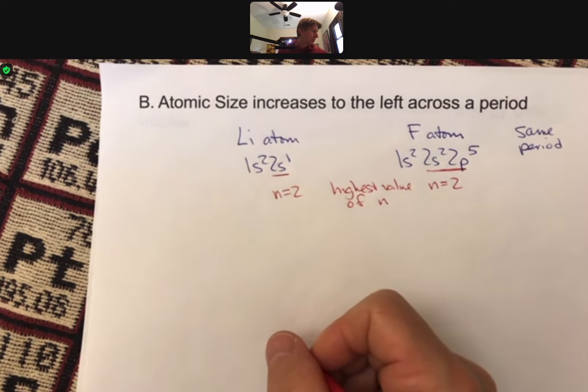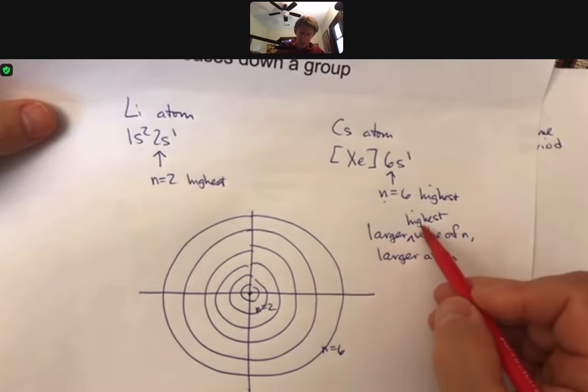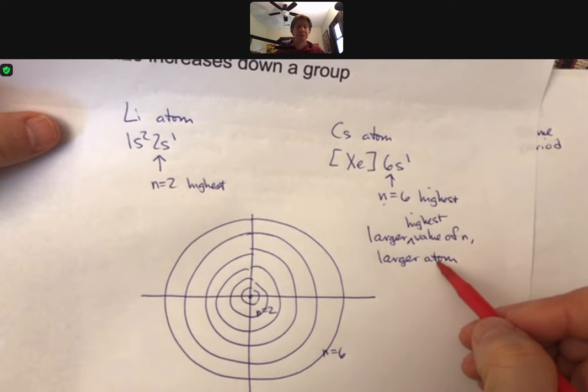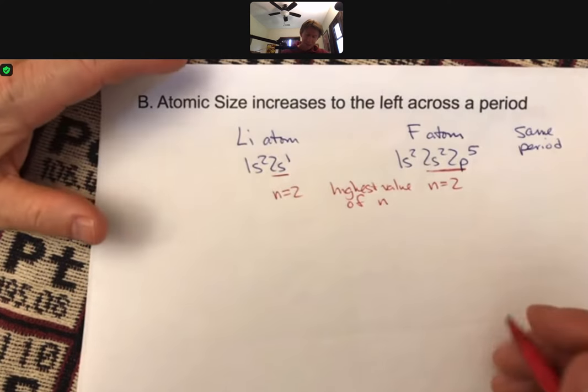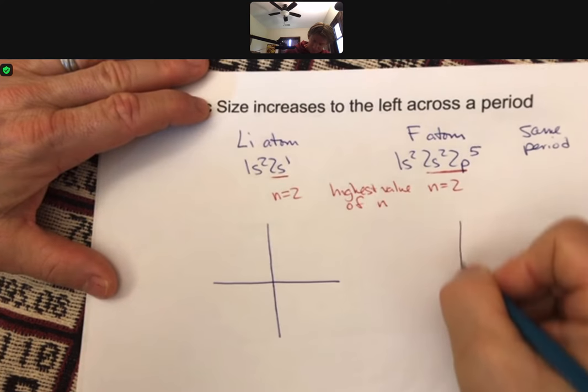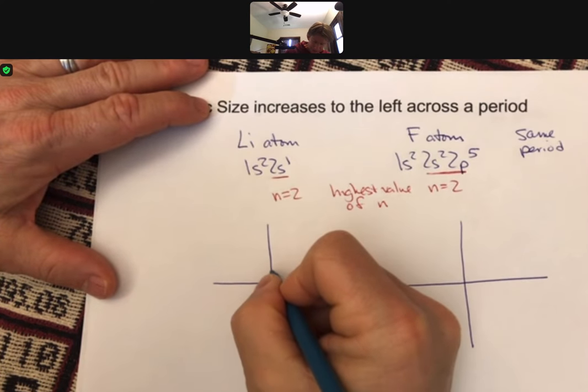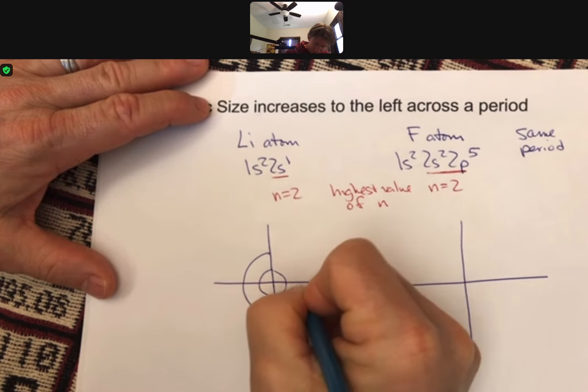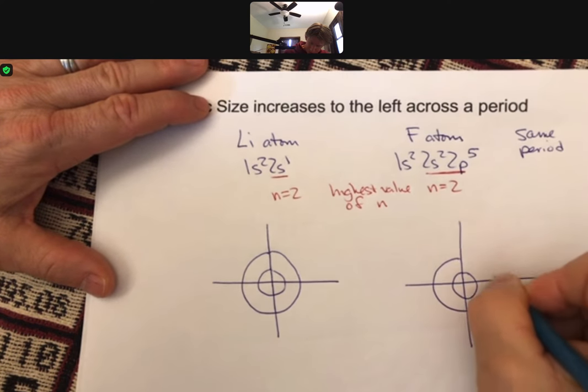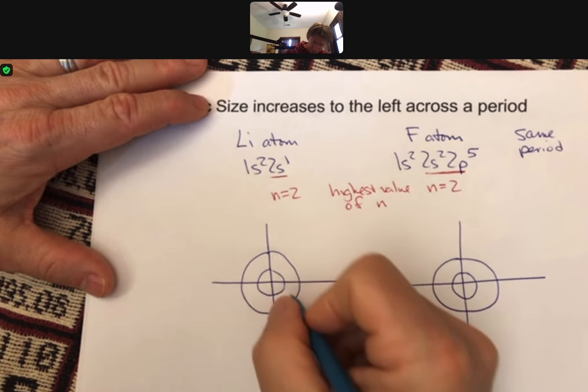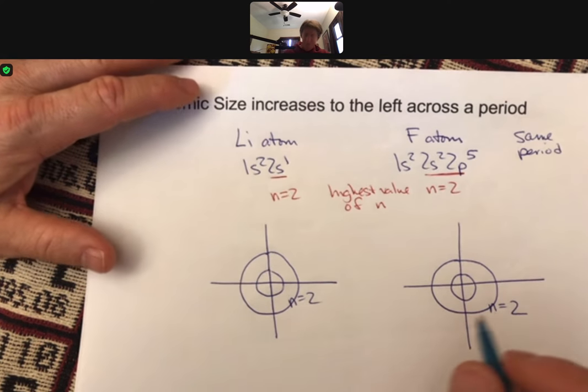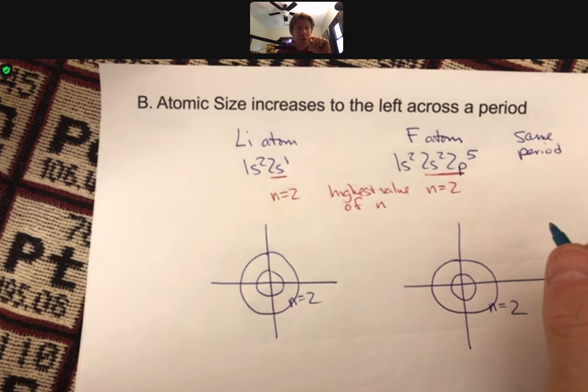So, the last one where we said the larger the highest value of n, the larger the atom, doesn't work for this. They have the same largest or highest value of n. So, then what makes the difference? Well, let's draw pictures of these atoms. Here's n equals 1, here's n equals 2. Here's n equals 1, and I'm going to draw this a little smaller, here's n equals 2.